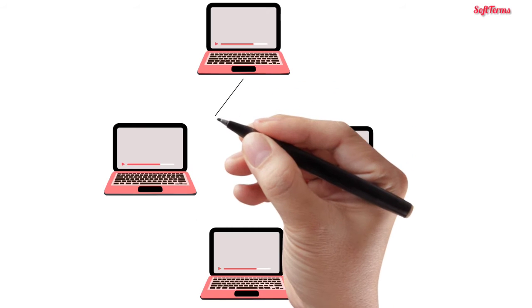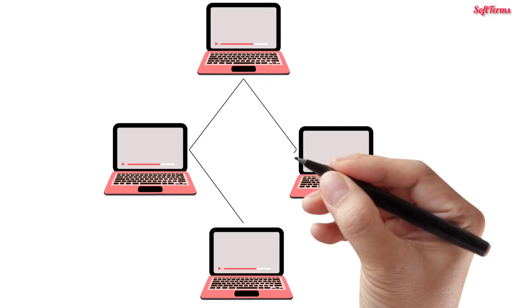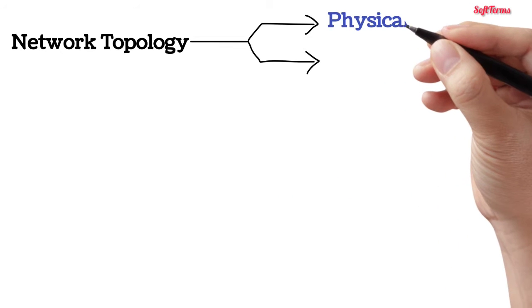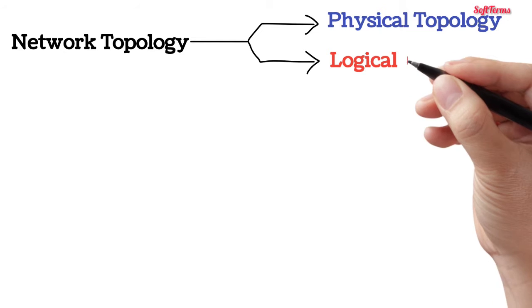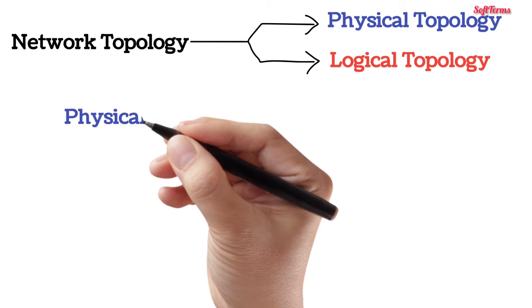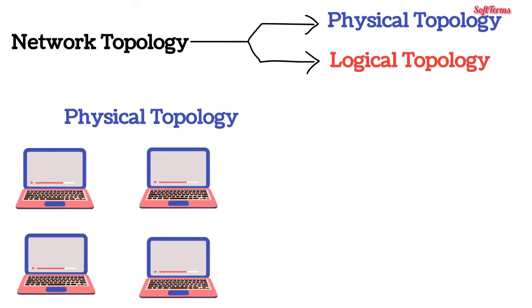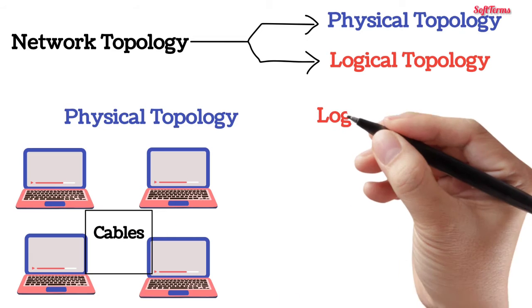Network topology is how computers connect or relate to one another in a computer network. It is of two types: physical topology and logical topology, where physical topology describes the way computers connect with the help of cables.